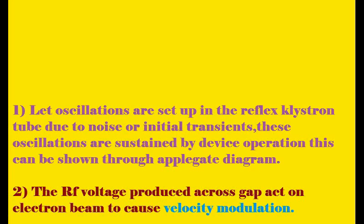Let us consider that oscillations are set up in the reflex klystron tube due to noise or transients, and these oscillations are sustained to produce microwave oscillations. Every device has noise and transients — when you switch something on or off, there is a slight transient. We will consider that oscillations are induced because of these transients. As RF oscillations are induced initially, the cavity is excited by the RF-induced voltage.